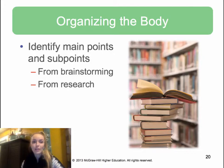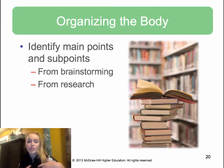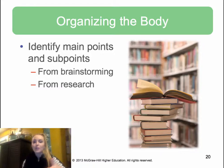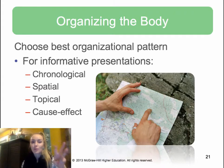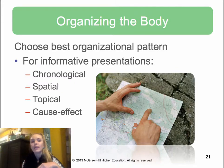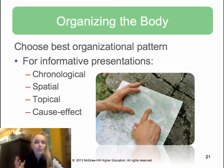First, identify main points and sub points through brainstorming and research — aggregate everything you know, write it all down, and figure out what the main and key ideas are and what tidbits support those ideas. Then choose the best organizational pattern. For informative speeches, we'll talk about four patterns: chronological, spatial, topical, and cause and effect. Cause and effect can be used for persuasion as well, but the textbook discusses it in the informative context too.